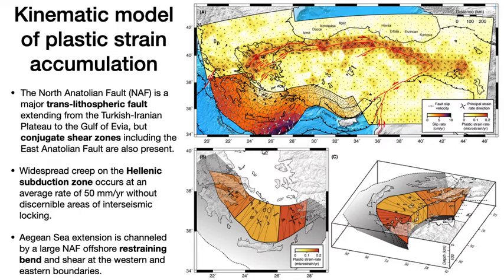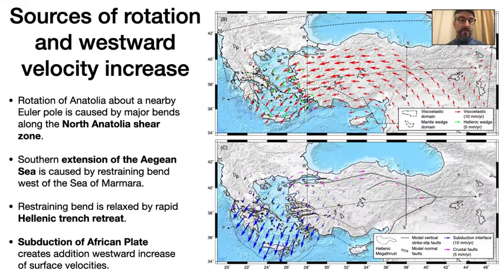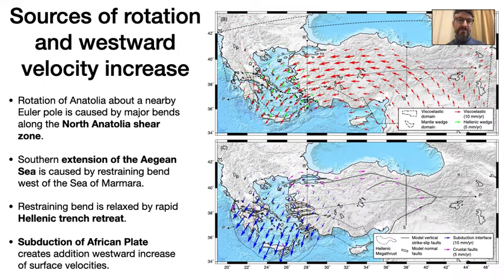Deformation is also caused by creep on the Hellenic subduction zone at an average rate of 5 cm per year without discernible areas of interseismic locking. The slip velocity tapers to the east to about 13.4 mm per year on the Cyprus Arc. The model allows us to explain the underlying sources for the rotation and the westward increase of the velocity field. Rotation is caused by large restraining bends along the North Anatolian Fault that contribute to trench retreat at the Hellenic Trench. The westward increase in interseismic velocities is due to a strong component of surface deformation caused by slip on the Hellenic Trench, shown in blue in the bottom figure.